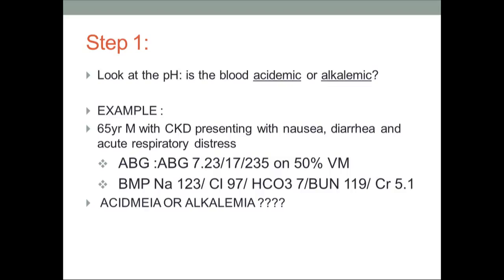We'll discuss with a clinical example: a 64-year-old male with CKD presented with nausea, diarrhea, and acute respiratory distress. He has an ABG of pH 7.23, bicarbonate of 17, and a PaO2 of 235 on 50% FiO2. His other parameters are: sodium 123, chloride 97, bicarbonate 7, blood urea nitrogen 119, and creatinine 5.1.